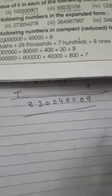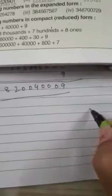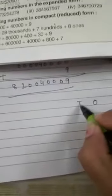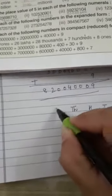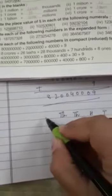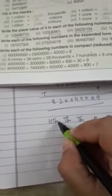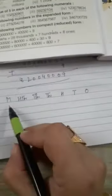This means the international system. From the right side, start with ones, tens, hundreds, thousands, ten thousands, hundred thousands, then millions.